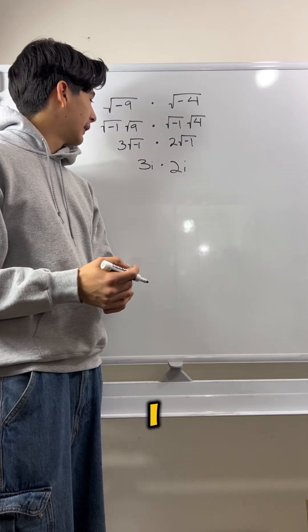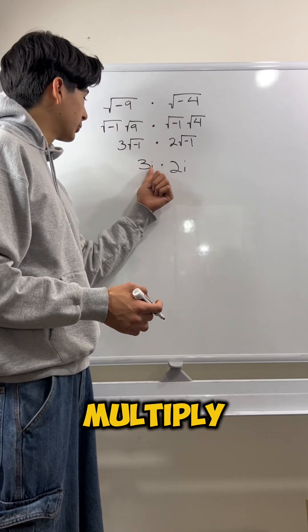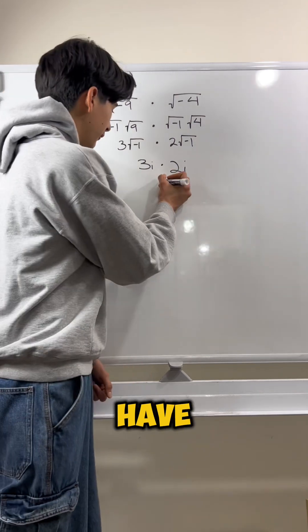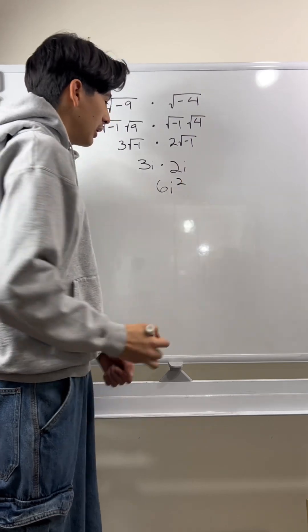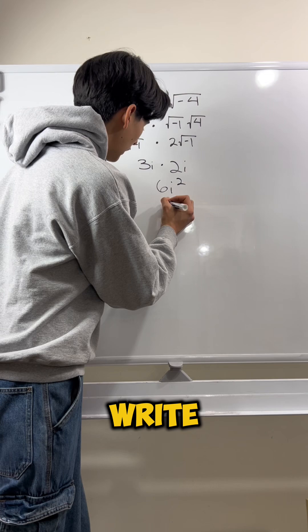Now, we have 3i times 2i. So, now we could break this down even further. So, we can multiply these two i's to get i squared and these two to get 6. So, we have 6i squared. Now, what is i squared? Well, i squared is just negative 1. So, let's write it like that.